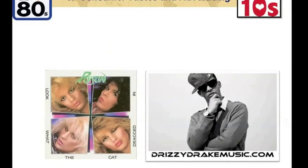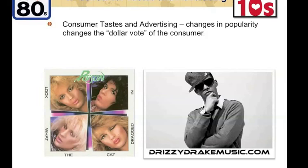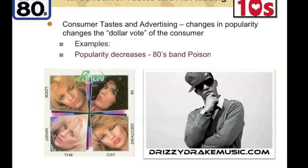The third thing that can affect the demand curve reflects the consumer's tastes. You can think about many different things in your life that you bought at one point that you may not buy today. When I was young back in the 80s, there was a group called Poison — a very popular band at the time. Today, I don't listen to Poison anymore. My tastes have changed, and so I would not spend my money on that product anymore. Decreased popularity will see a decrease in demand for things like the 80s band Poison.